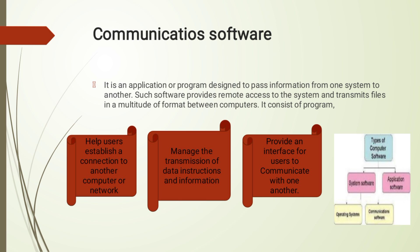Communication software consists of three main functions. First, it helps a user to establish a connection between the computer or network. Second, it manages the transmission of data, instructions, and information. These two functions are basically functions of system software. Third, it provides an interface for users to communicate with one another, which is basically a function of application software.